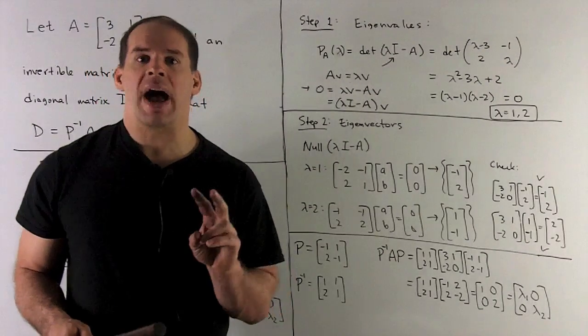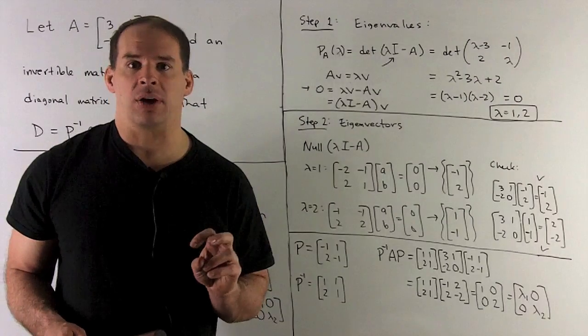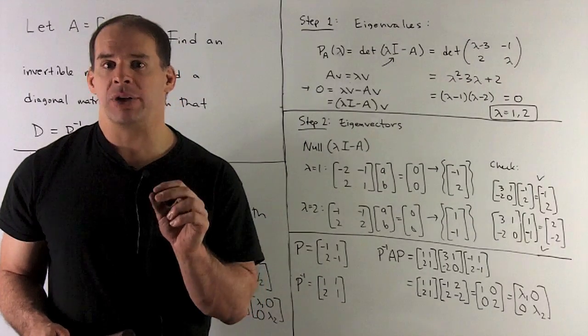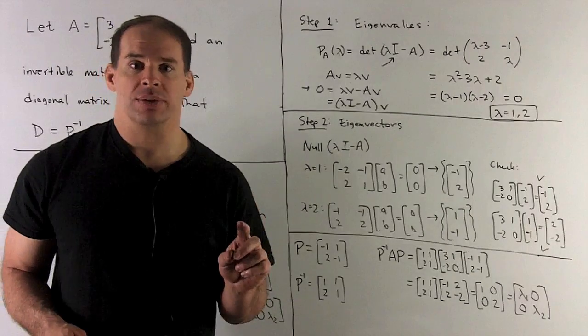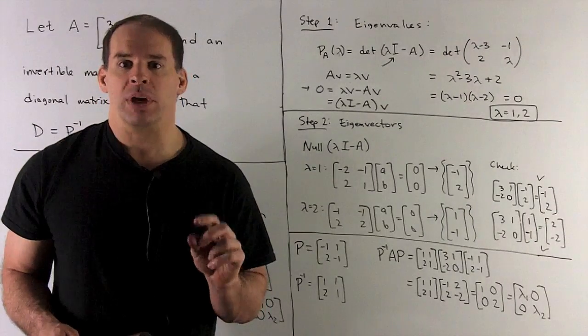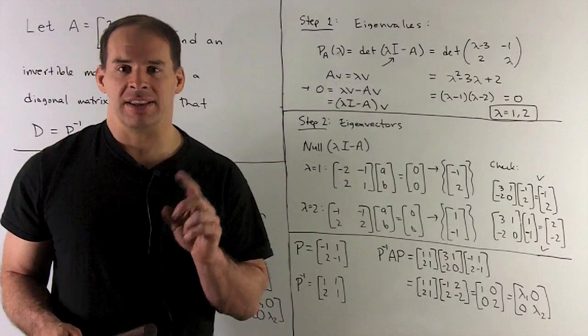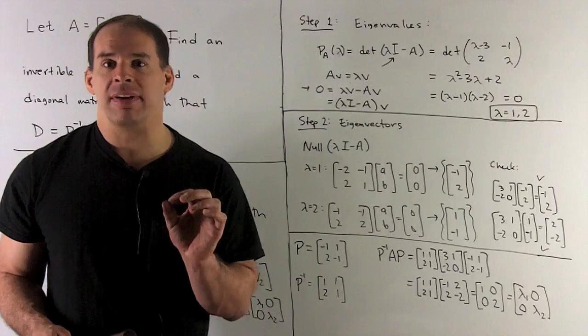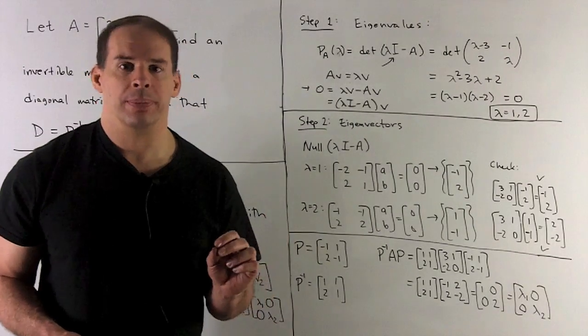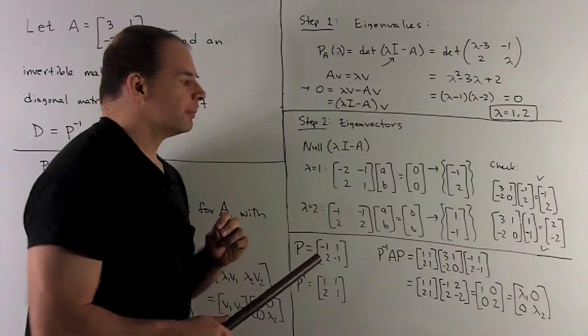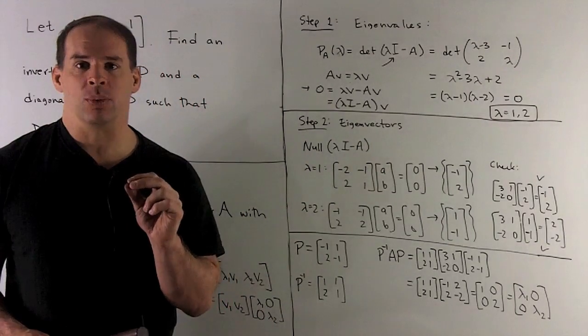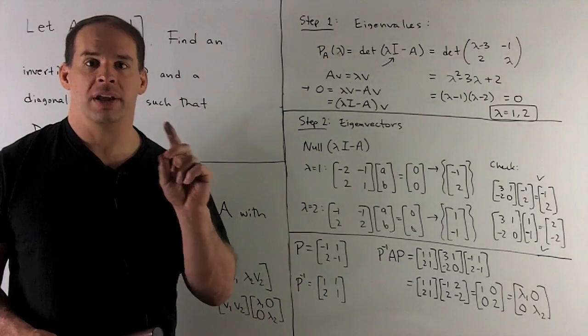Now, we have two eigenvectors, two eigenvalues. Our P matrix is given by using our eigenvectors as columns. When we do that, we expect for our diagonal matrix to get the diagonal entries to be the eigenvalues in the same order. So, if I use minus one, two, one, minus one, I expect my D to be equal to the diagonal matrix, one, two.